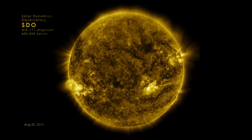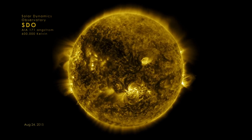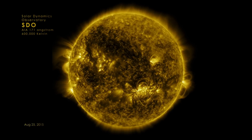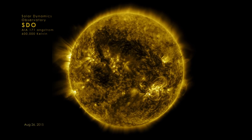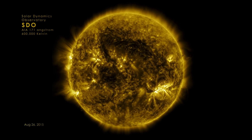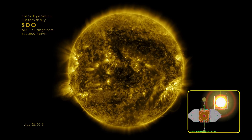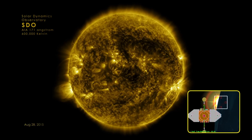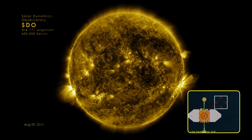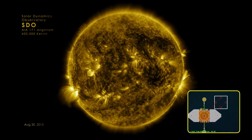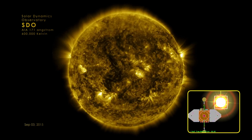When we see the frames go dark, that's eclipse season. That's when the Solar Dynamics Observatory, which is orbiting the Earth, goes behind the Earth. The Earth is between the Solar Dynamics Observatory and the sun, and so the Earth eclipses the images.